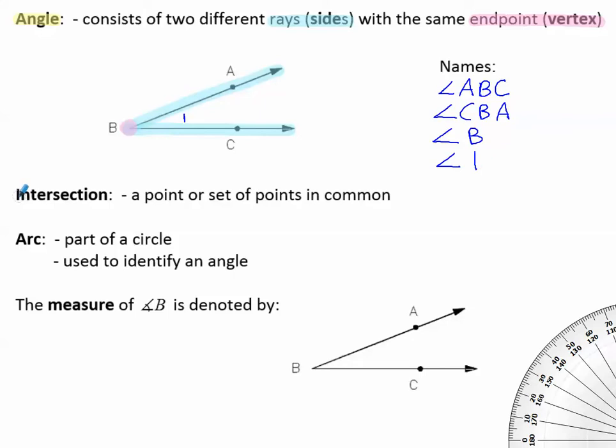The intersection or any intersection is a point or set of points that is in common. So for example, where this ray meets this ray is the intersection point B. That is the intersection of these two rays, or the sides of the angle. So the intersection of the rays for the sides of the angle will be the vertex of the angle.